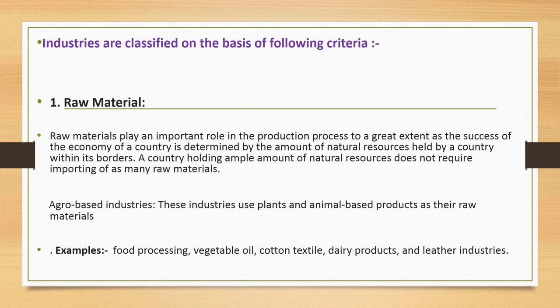The first criterion is raw materials. Raw materials play an important role in the production process, and the success of a country's economy is largely determined by the amount of natural resources it holds within its borders. A country holding ample natural resources does not require importing as many raw materials. Agro-based industries use plant and animal-based products as their raw materials. Examples include food processing, vegetable oils, cotton textiles, dairy products, and leather industry.